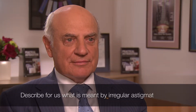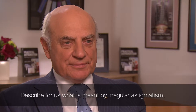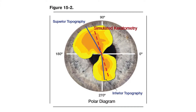Describe what is meant by irregular astigmatism. A regular astigmatism is when the bow tie of a topography map is a bit tweaked. It's either not in a straight line, which means it's non-orthogonal, or there's asymmetry between the two sides. In other words, you have a lot more colour on the topographic map on one side than the other, or you have a combination of both.